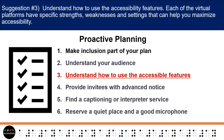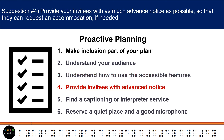Suggestion number three: understand how to use the accessibility features. Each of the virtual platforms have specific strengths, weaknesses, and settings that can help you maximize accessibility. Suggestion number four: provide your invitees with as much advance notice as possible, so that they can request an accommodation, if needed.